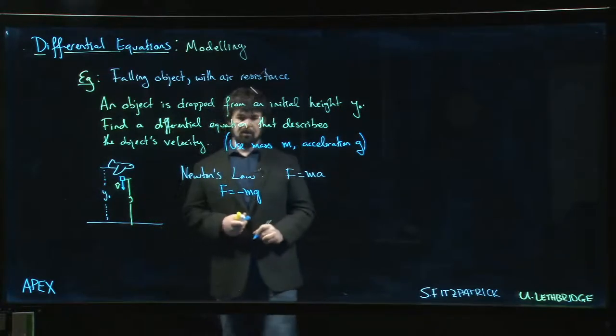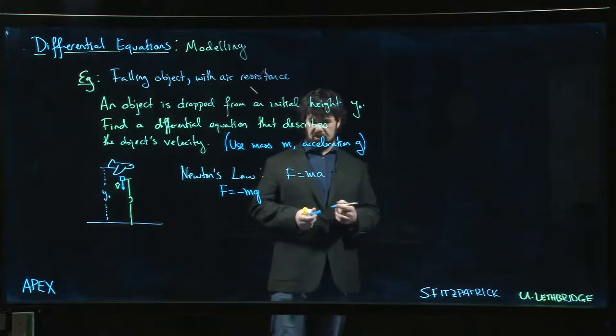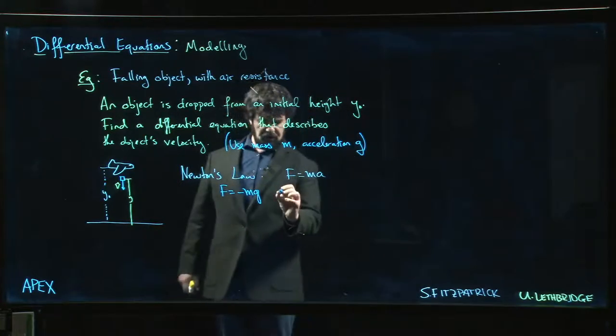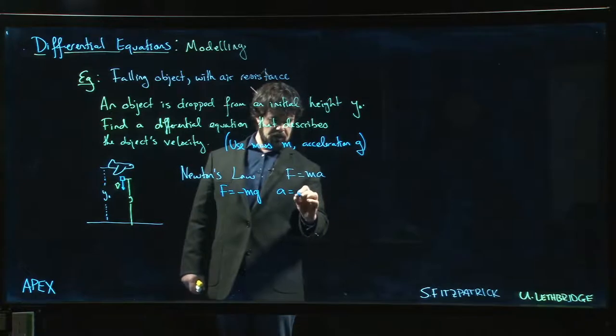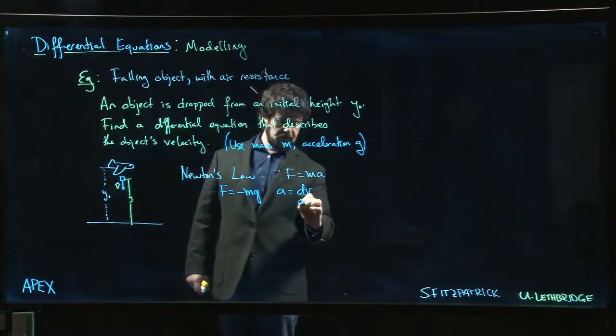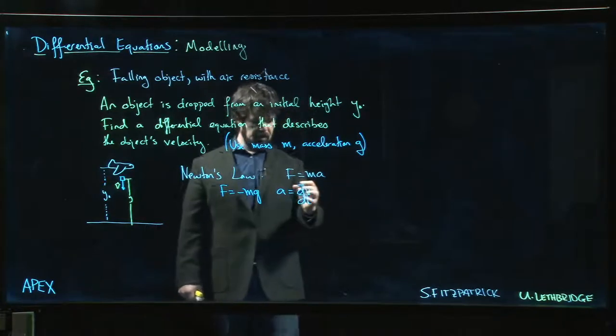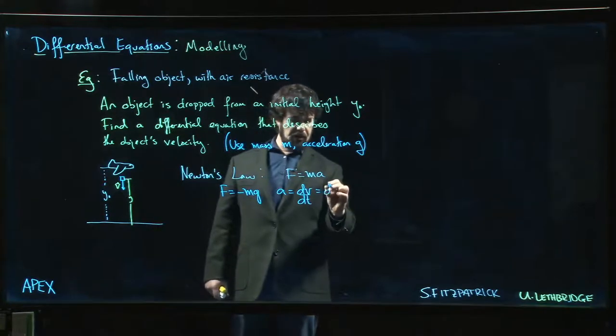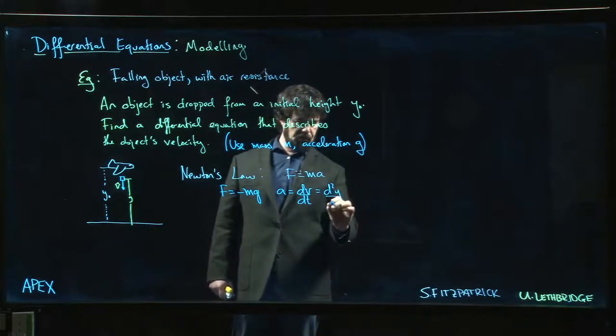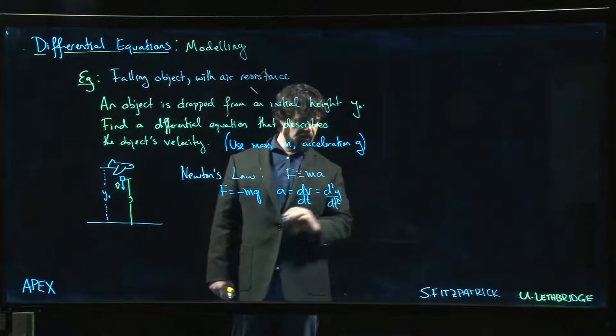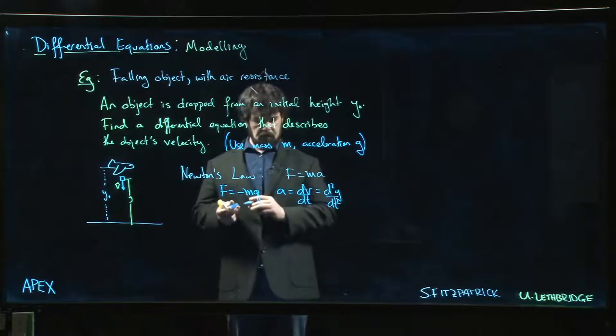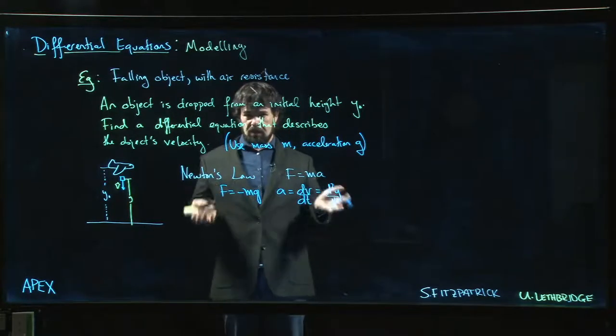To indicate the force is acting downwards toward the ground, maybe we put -mg. Now acceleration, we can write as dv/dt - it's the derivative of velocity. If we wanted to do this in terms of position, it's also the second derivative of y with respect to t, but let's stick to first order differential equations because that's what we know how to solve.